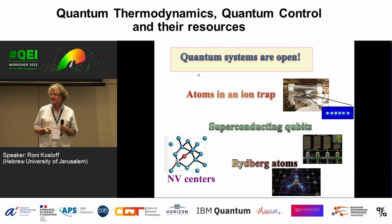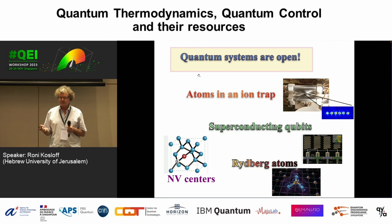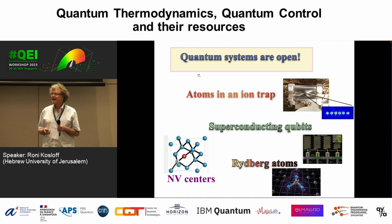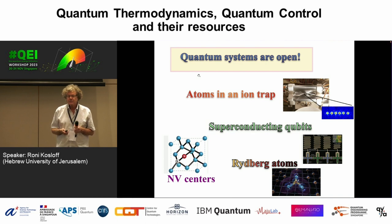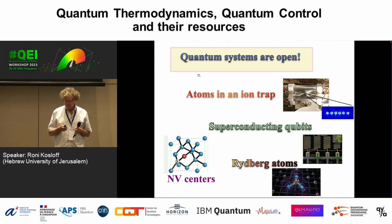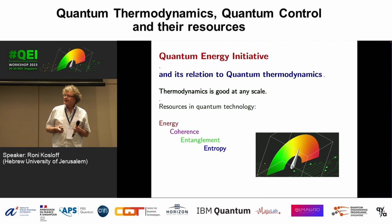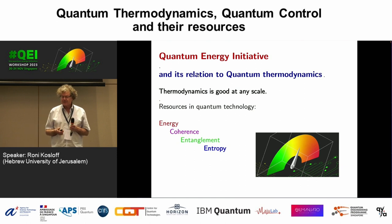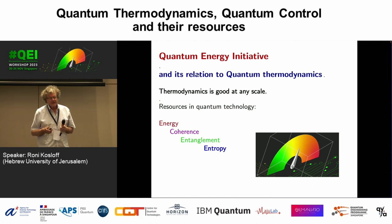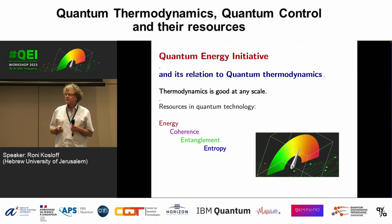Any quantum system is open and we have to think about it. We have a few examples here: an ion trap, a superconducting qubit, Rydberg atoms, NV centers — all these things are open and we need both theory and understanding of how these things in the quantum regime work. This is kind of an outline, but let's start from our quantum energy initiative, which is closely related to quantum thermodynamics.